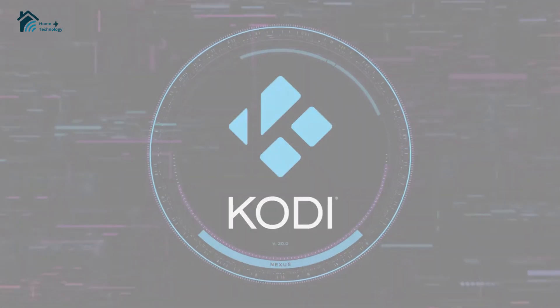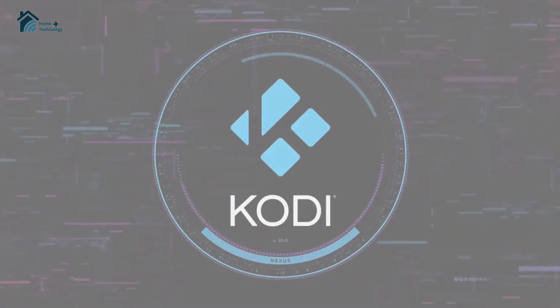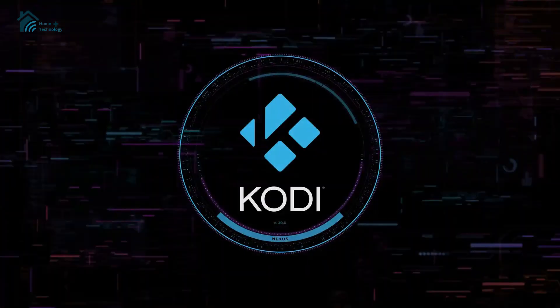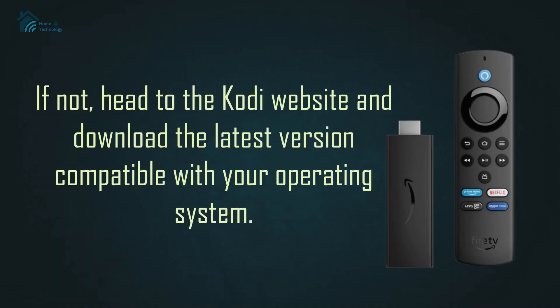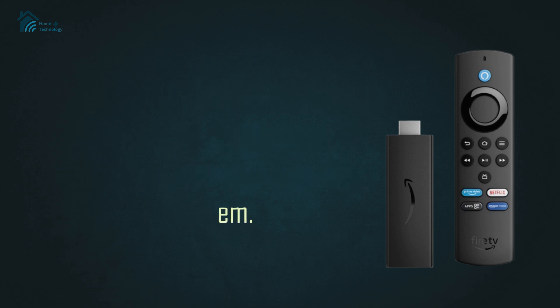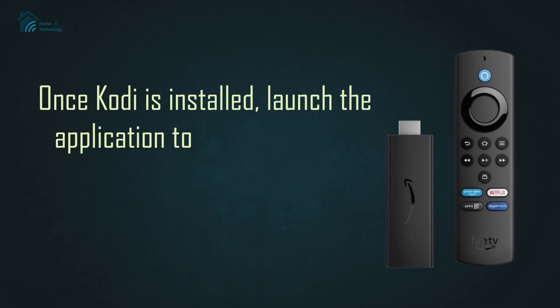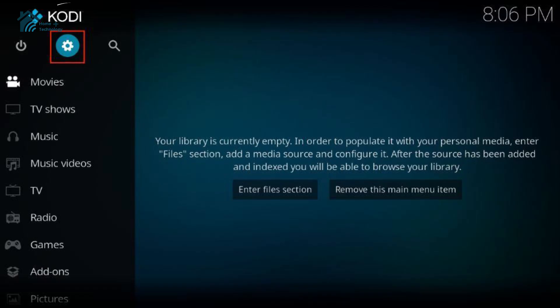First things first, make sure you have Kodi installed on your device. If not, head to the Kodi website and download the latest version compatible with your operating system. Once Kodi is installed, launch the application to begin the setup process.